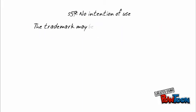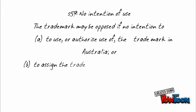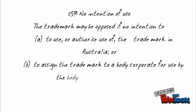Under Section 59, the registration of a trademark may be opposed on the ground that the applicant does not intend to use or authorize use of the trademark in Australia, or to assign the trademark to a body corporate for use by the body corporate in Australia, in relation to the goods or services specified in the application.